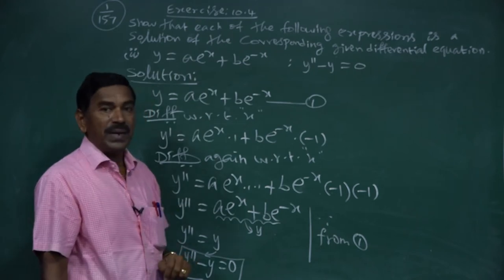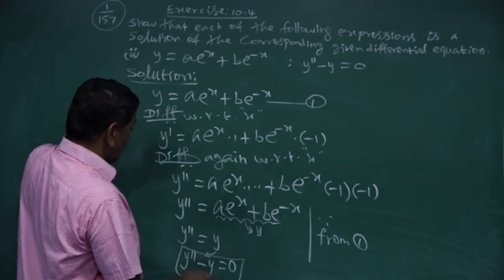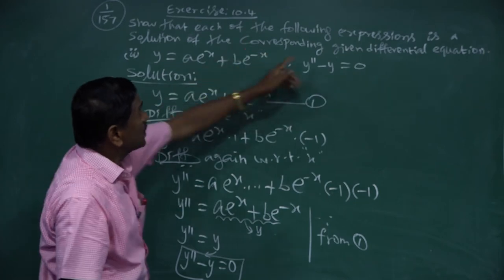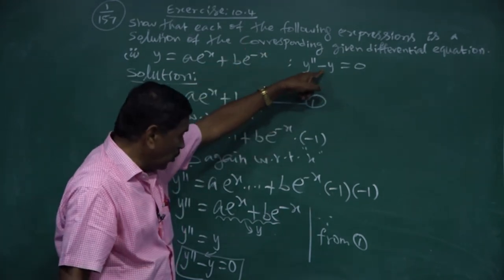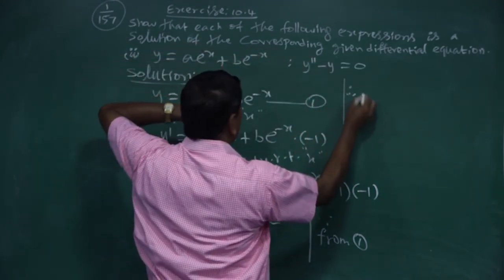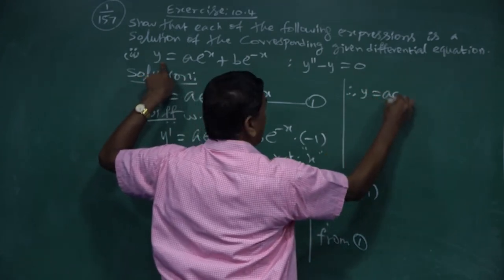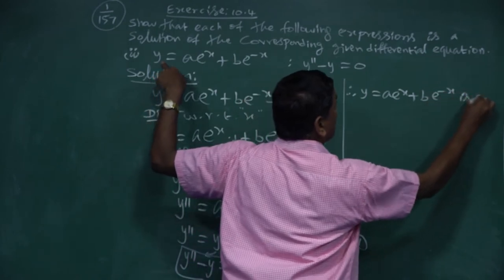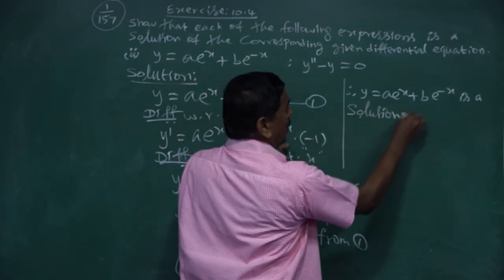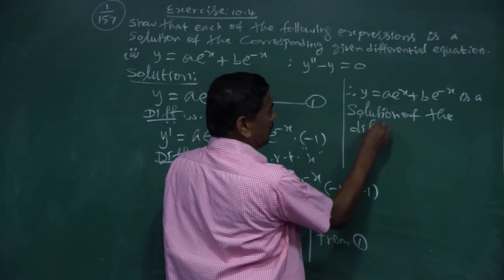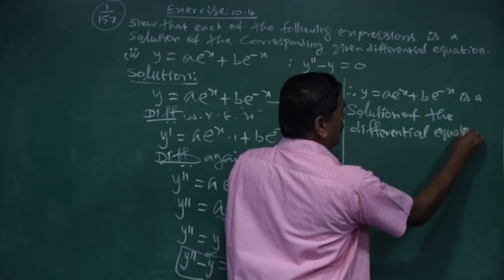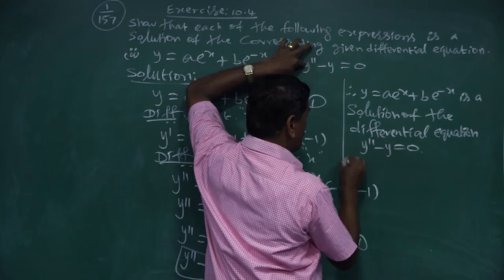Available answer: y'' = y. Required answer: y'' - y = 0. The adjustment is simple: bring y to the left side, giving y'' - y = 0, which is the required answer. Therefore, y = a·e^x + b·e^(-x) is a solution of the differential equation y'' - y = 0.